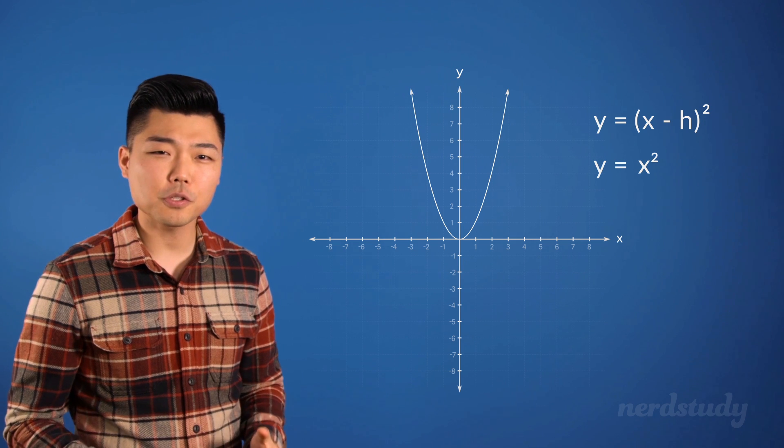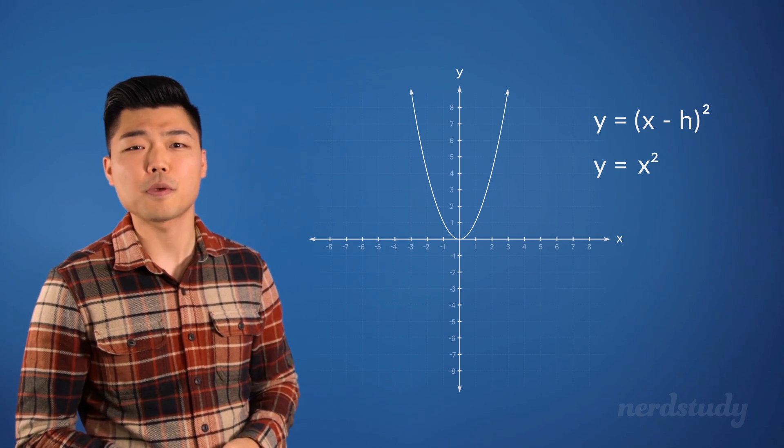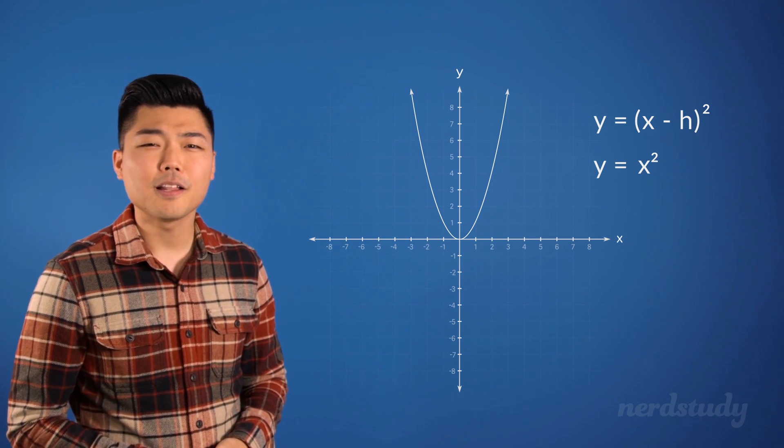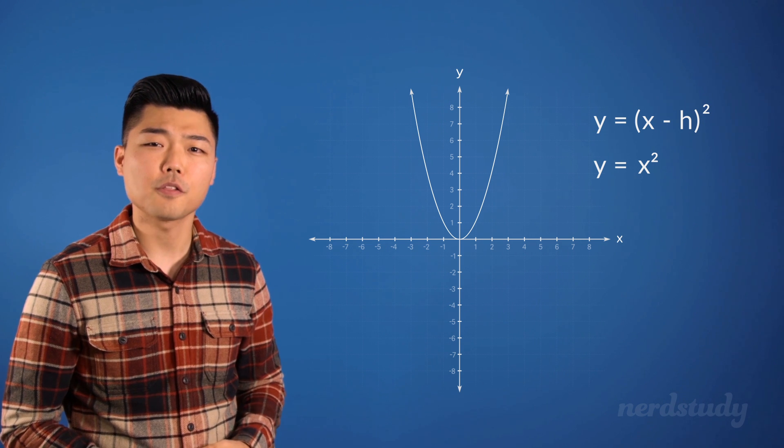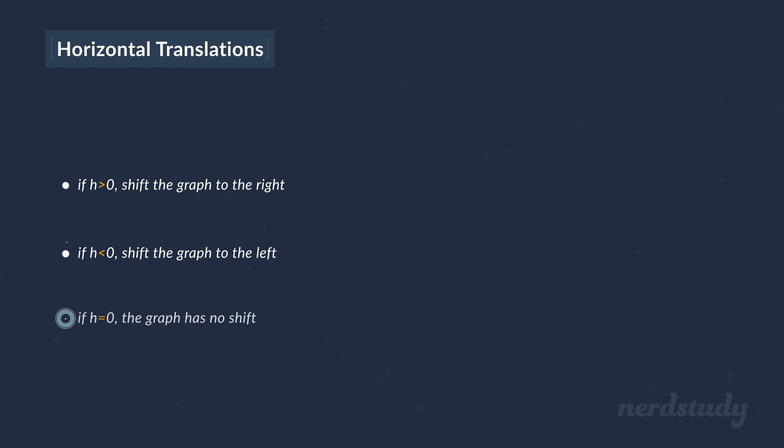Now there's a potential confusion that some students may find difficulty with. Let's explore this through the use of an example. Here's the equation we will be working with: y equals (x minus 2) squared.